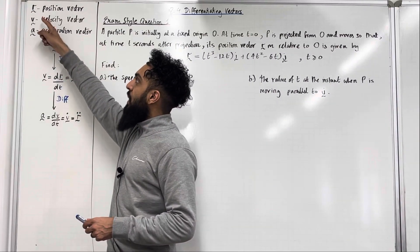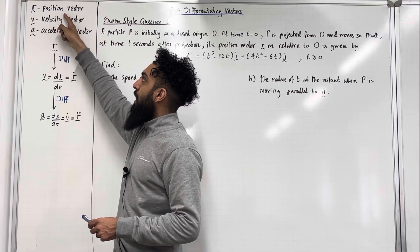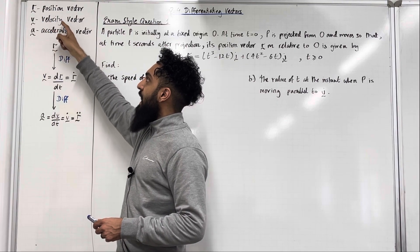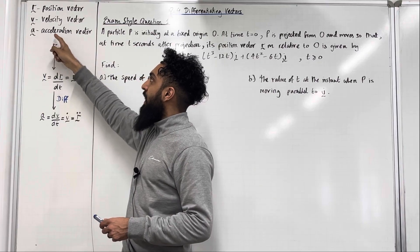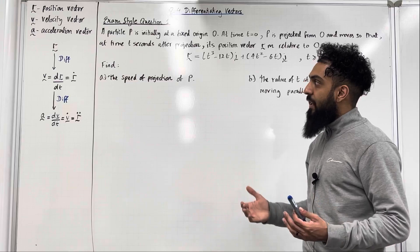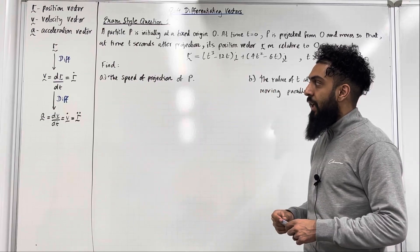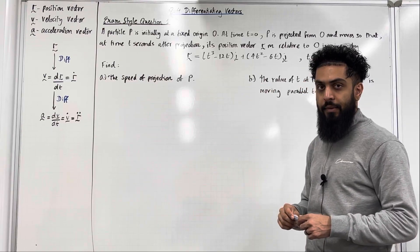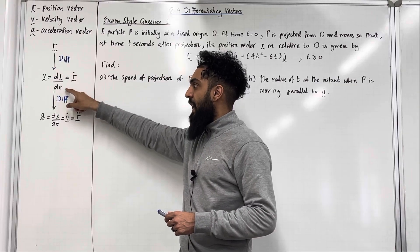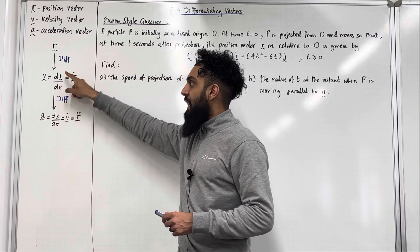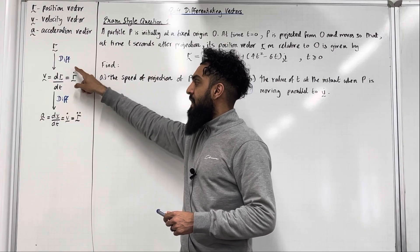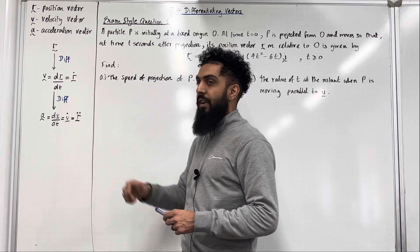R with the squiggle represents the position vector of the particle. V with the squiggle represents the velocity vector of the particle. A with the squiggle represents the acceleration vector of the particle. If you take the position vector and differentiate it you get the velocity vector, so the velocity vector is the derivative of the position vector. This can be rewritten as R squiggle with a dot on top, representing the derivative of the position vector with respect to time.